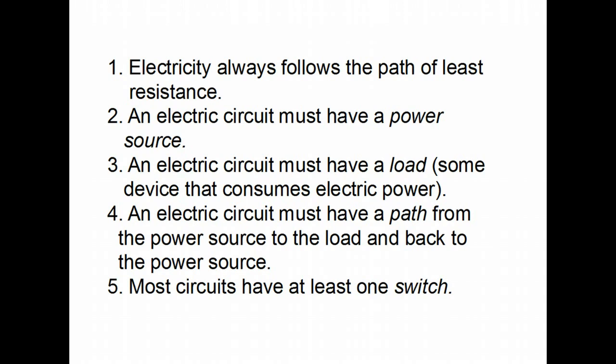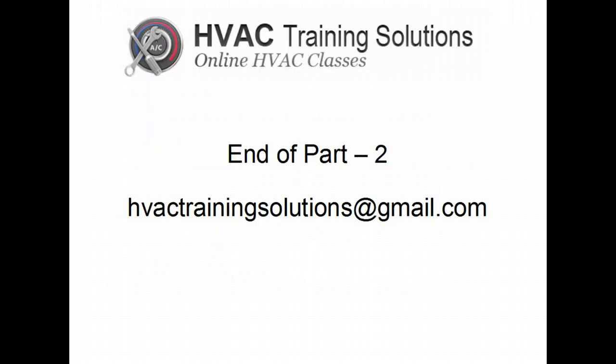Some things to remember: electricity always follows the path of least resistance, no matter what. Each circuit needs a power source, a path for the current to flow, a load which is a device that does the work and consumes the power, and at least one switch to control that circuit on and off. That is the end of Part 2 on schematic diagrams. If you have any questions, please contact HVACTrainingSolutions at gmail.com.